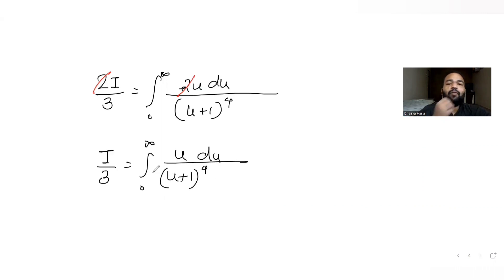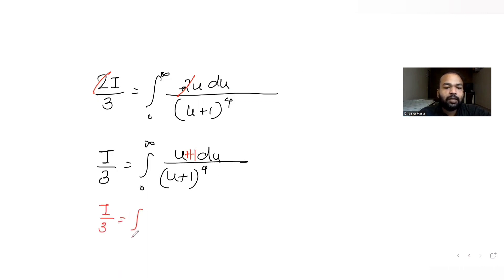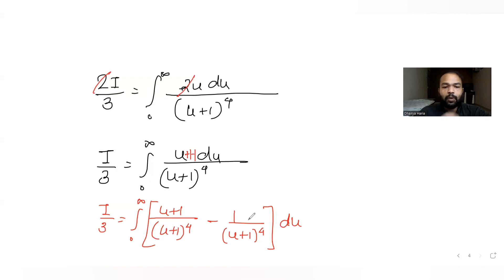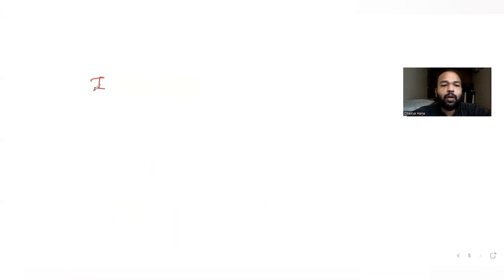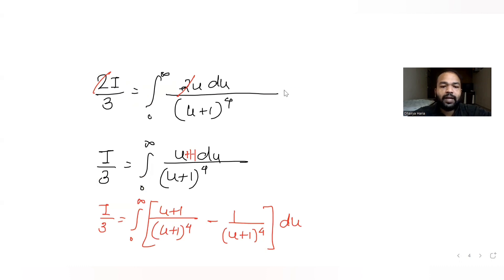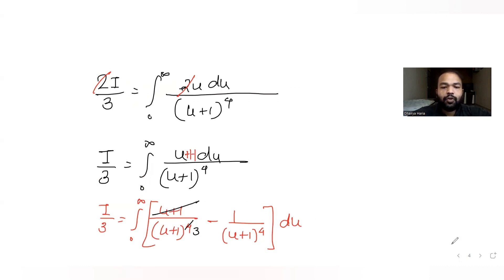To solve this further, I make the numerator match the denominator. With u I should have plus one, so I write u = (u+1) - 1. This splits the integral into: I/3 equals the integral of 1/(u+1)^3 du minus the integral of 1/(u+1)^4 du, both from 0 to infinity.